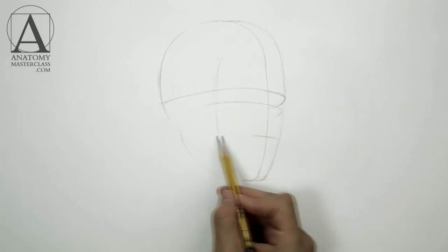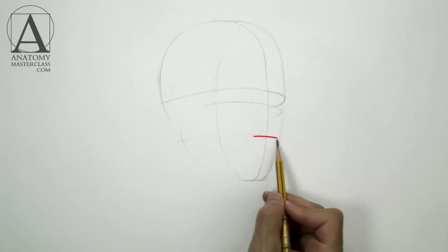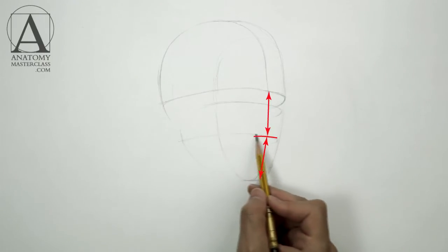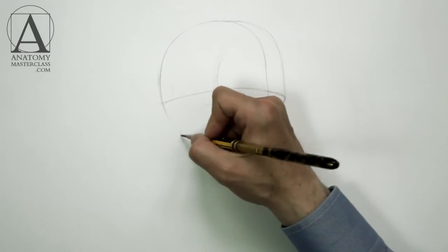There is one more line that is an important landmark for a portrait artist, the line of the base of the nose. The distances between this line to the bottom of the chin and the eyebrows are equal to each other.